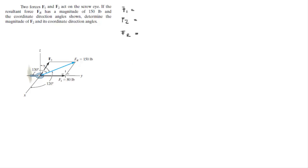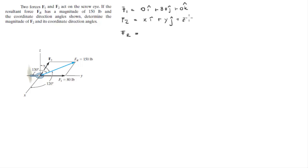Just by looking at it, we're going to work with F1 first. We can tell that F1 is equal to 0i plus some j component plus 0k, because this force has no X component and no Z component. F2 is the one we're trying to find, with X, Y, and Z components. And FR has this magnitude and these coordinate direction angles.